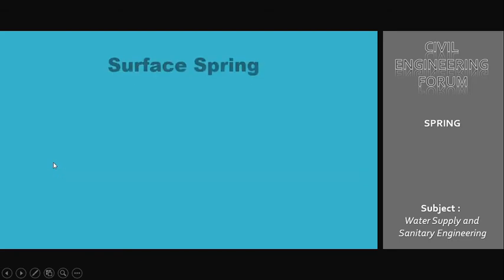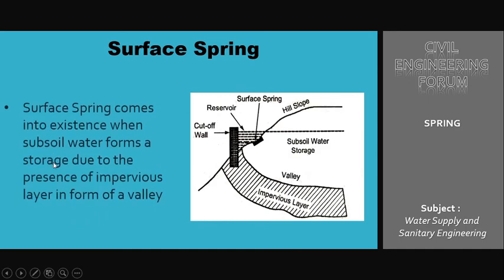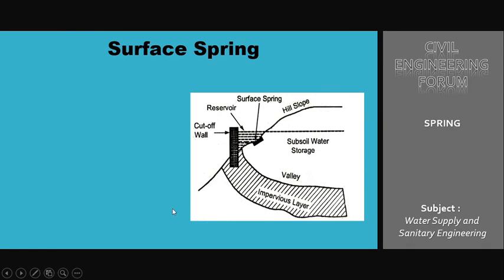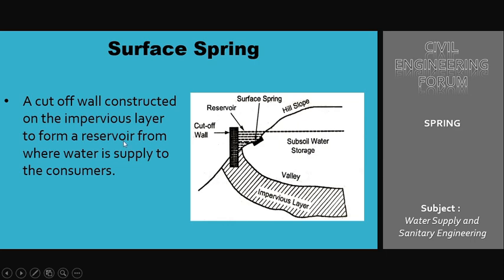The third and last type is the surface spring. A surface spring comes into existence when subsoil water forms a storage due to the presence of an impervious layer in the form of a valley. This subsoil water naturally accumulates on the hill due to the geometry of the impervious layer. We can even construct a cutoff wall on the impervious layer to form a reservoir from where water is directly supplied to the consumer.